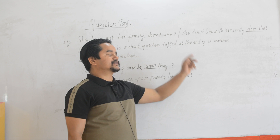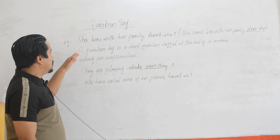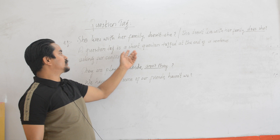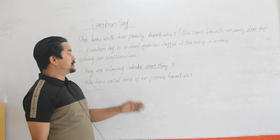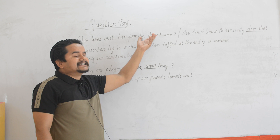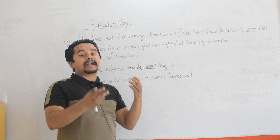I have also given one definition here. So what is the question tag? A question tag is a short question added at the end of a sentence asking for confirmation. For example: 'She lives with her family, doesn't she?' This is the question tag that is used at the end of the sentence. This shows that we are just asking for confirmation — we are trying to make sure whether she lives there or not.